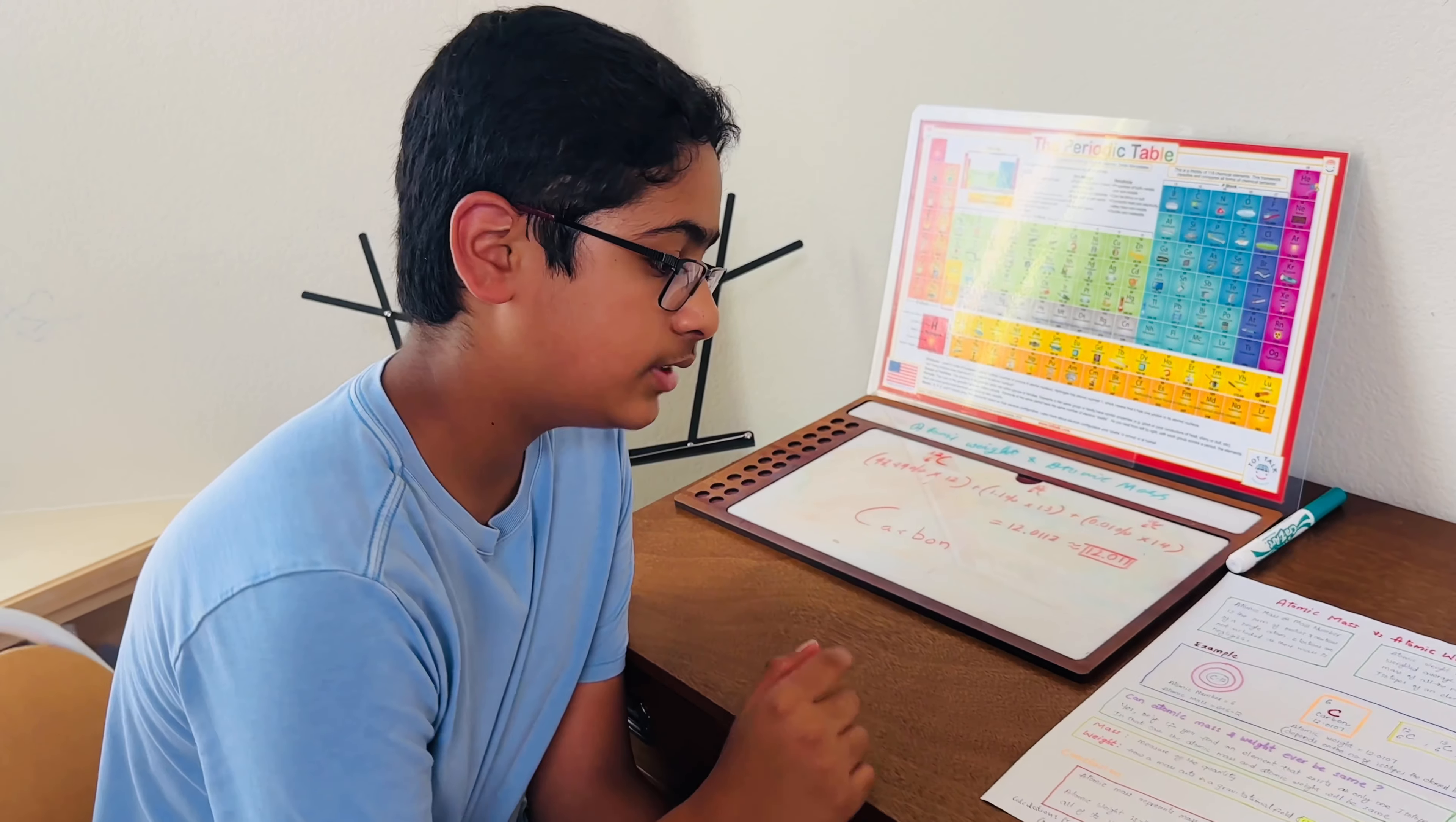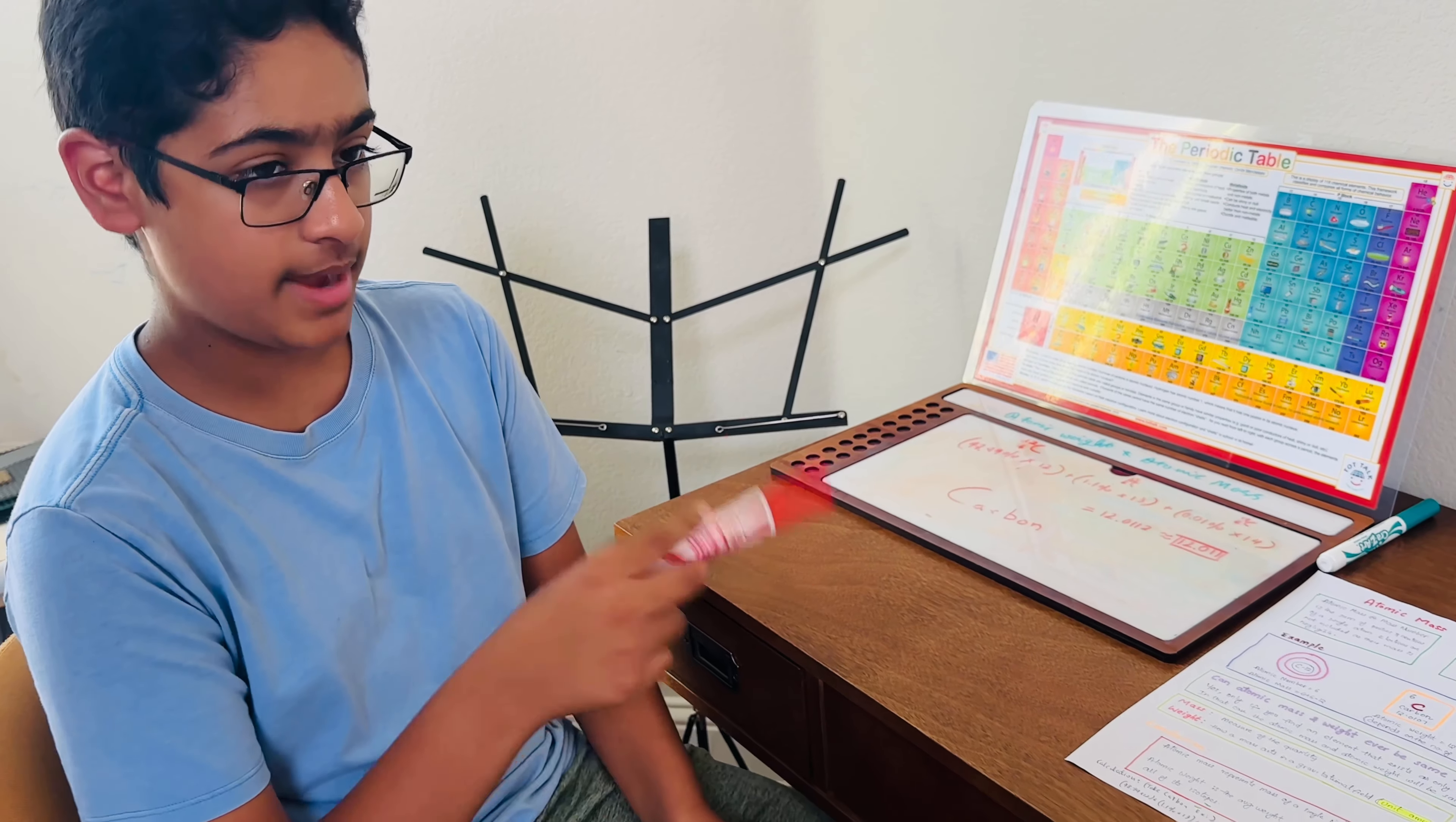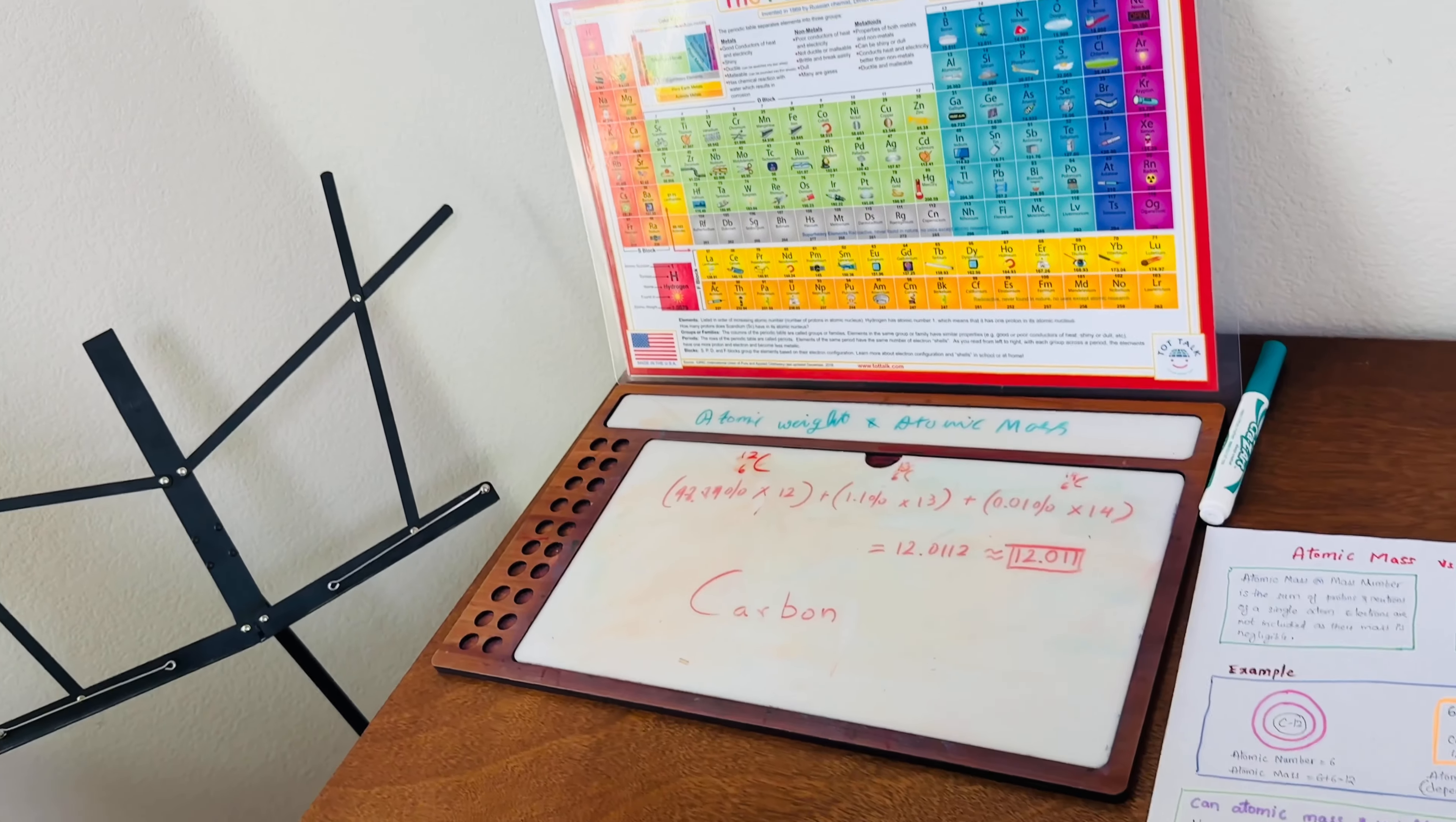Can atomic mass and weight ever be the same? Yes, it's true. However, only when there's one isotope. If there are multiple isotopes, then this will vary. For example, we said that carbon has the mass of 12. If you look over here to this isotope, yes, it has the mass of 12. But if you look at this, no, it's 13. Here, no, it's 14. So it varies based on how many isotopes there are.